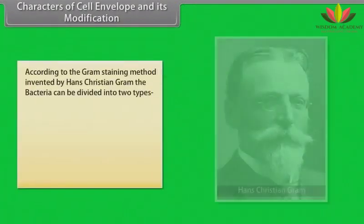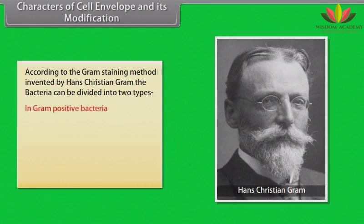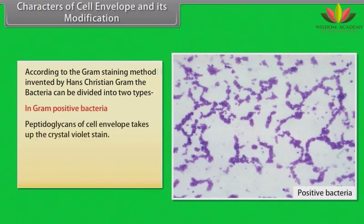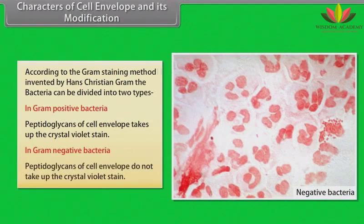According to the Gram-staining method invented by Hans Christian Gram, bacteria can be divided into two types. In Gram-positive bacteria, peptidoglycans of the cell envelope take up the crystal violet stain. In Gram-negative bacteria, peptidoglycans of the cell envelope do not take up the crystal violet stain.